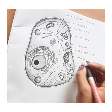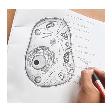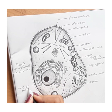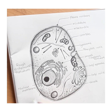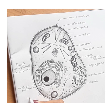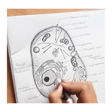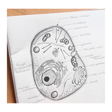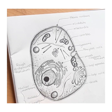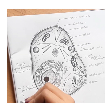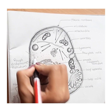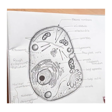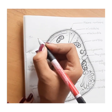Smooth endoplasmic reticulum. Here is the nuclear membrane, nucleolus with its chromatin material, which all comprises into a nucleus. Ribosomes and intermediate filaments.